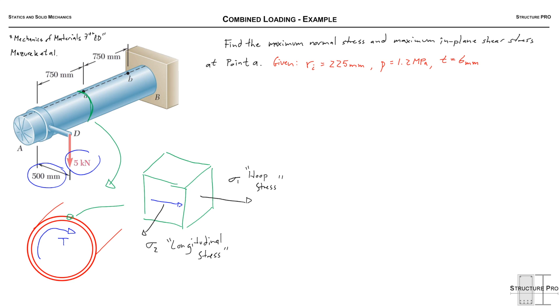And then finally we have this bending stress drawn in red. I'll just call that sigma B. So that's a bending stress due to the 5 kN force acting 750 millimeters from the section at A.